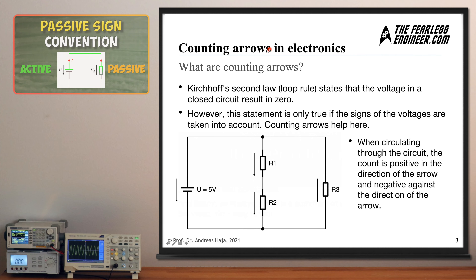In this video you will learn what the current and voltage counting errors in electrical networks are, what they are all about, and what the difference is between the passive and the active reference system. In addition to the necessary theory, there's going to be an example showing how to set up a loop equation and how to correctly consider the counting arrows of both sources and consumers. Finally, there's going to be a summary of the most important facts at the end. My name is Andreas from The Fearless Engineer, and here we go.